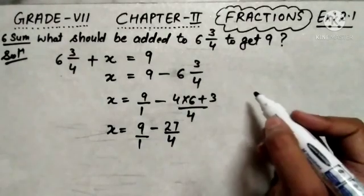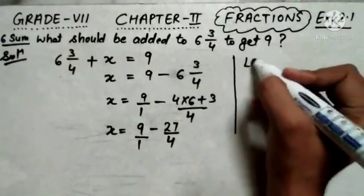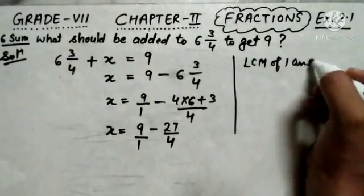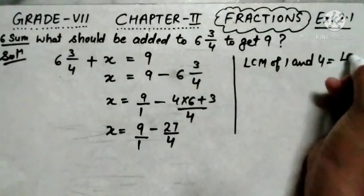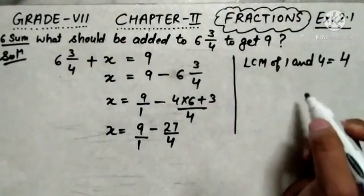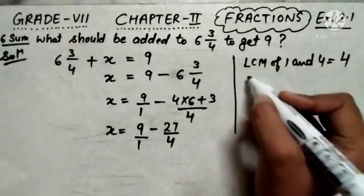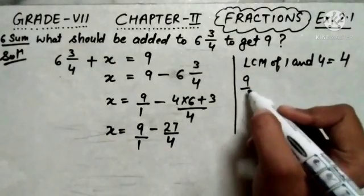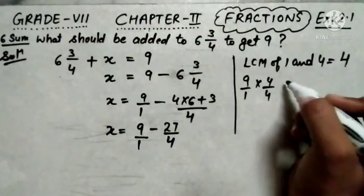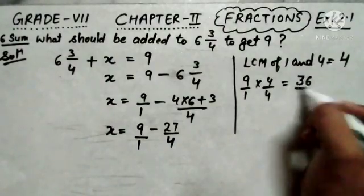First of all we will find the LCM of 1 and 4. The LCM of 1 and 4 equals 4. So now 9 upon 1 can be written as 9 upon 1 multiplied by 4 upon 4, which equals 36 upon 4.